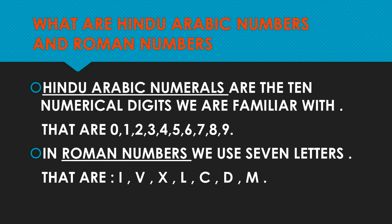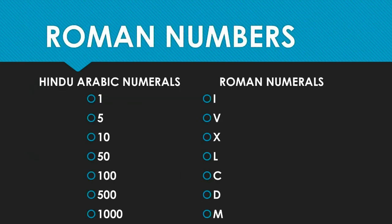Hindu-Arabic numerals are the 10 numerical digits we are familiar with: zero, one, two, three, four, five, six, seven, eight, and nine. In Roman numbers we use seven letters: I, V, X, L, C, D, and M. Now let's see some important Roman numbers for Hindu-Arabic numerals.